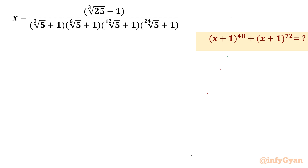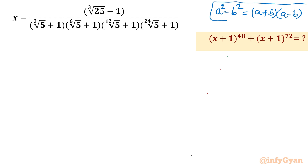Let me begin this video by writing the identity which I will be using while solving — that is the difference of squares. So a squared minus b squared will be used. I will write that formula: a squared minus b squared is equal to a plus b times a minus b. Now one very important algebraic manipulation we will use here is multiplying by the conjugate.